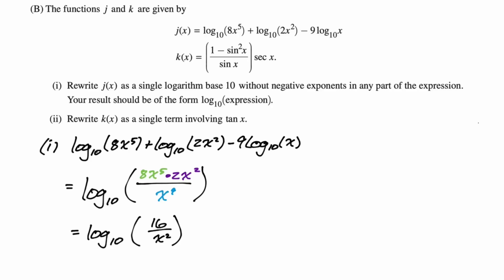Part 2. Rewrite k(x) as a single term involving tangent. This is how they get trig identities on this thing. So we're just going to start off. 1 minus sin^2 is cos^2. So we have cos^2 over sin. Secant is 1 over cosine. So we'll say times 1 over cosine. Now we can cancel the cosine. So we get cosine over sine. That's cotangent. And cotangent is 1 over tangent. Or you could just know that cosine over sine is 1 over tangent. Either way, we're getting 1 over tangent there.